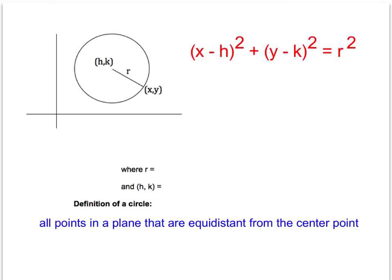So now we have come to the standard equation of a circle, and this is what you're going to want to write down in your notes: x minus h squared plus y minus k squared equals r squared.